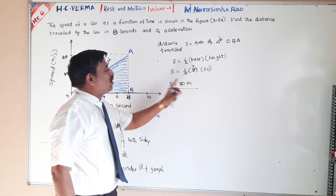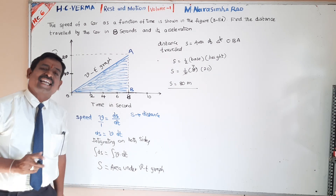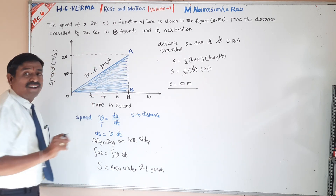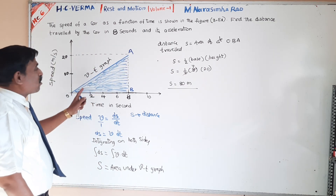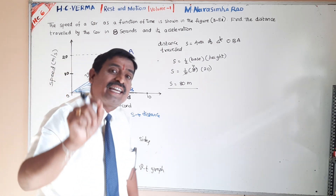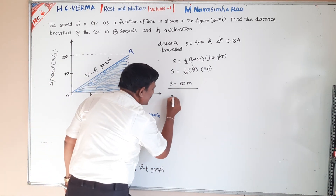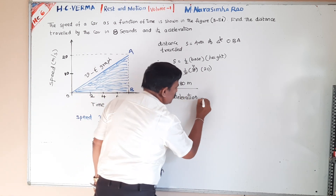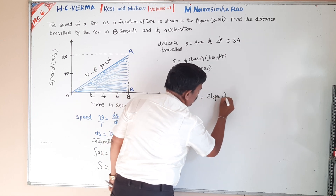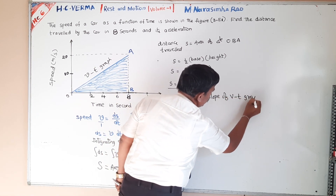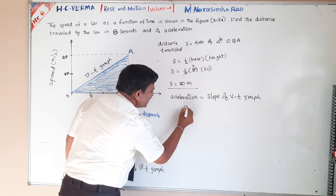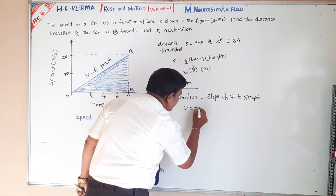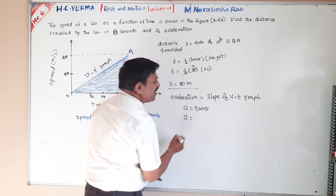They are asking for acceleration. We are having one formula: the slope of the VT graph gives acceleration. Acceleration is equals to slope of VT graph. Slope is nothing but tan theta, so acceleration A is equal to tan theta.